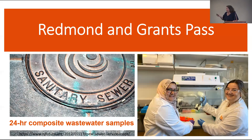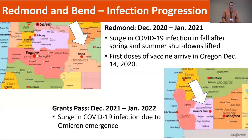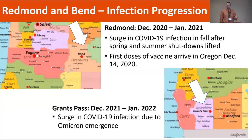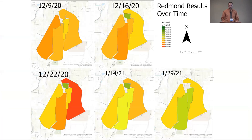Michael will now talk about Redmond and Grants Pass results. One of the first time-series studies was Redmond, Oregon, from December 2020 through January 2021 — we also did Bend simultaneously but returned to Redmond several times. This was during the first vaccine doses arriving and people coming out of lockdown, and we saw a COVID surge around that time. We'll also look at Grants Pass in December 2021 — right when the Omicron variant was traveling across the nation.